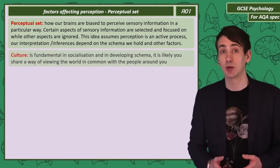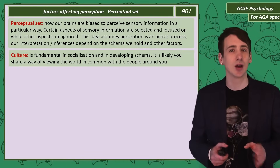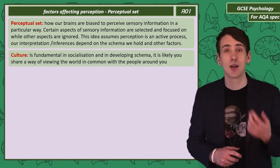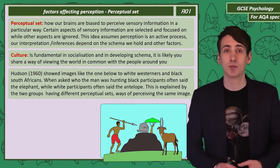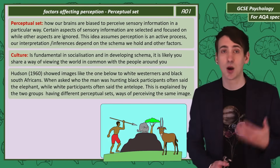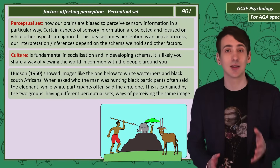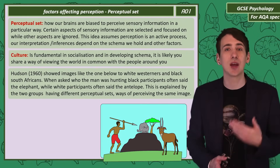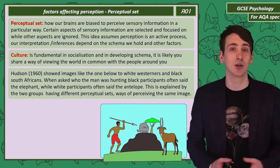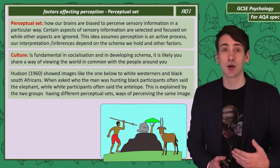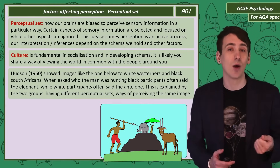Culture influences the development of people through socialization. We learn norms and values and tend to share the same mental schemas as other people in our society, which means people from different cultures will perceive the world differently. Hudson showed this with images: when presented with a hunting scene, black South Africans were more likely to say the man was hunting the elephant, while white Westerners said the antelope. Both cultures perceived the same image differently. It's likely that white Westerners had more experience with drawn images and perceived the man as closer to the antelope, assuming the elephant — while closer on the drawing — was large and far away on a hill.